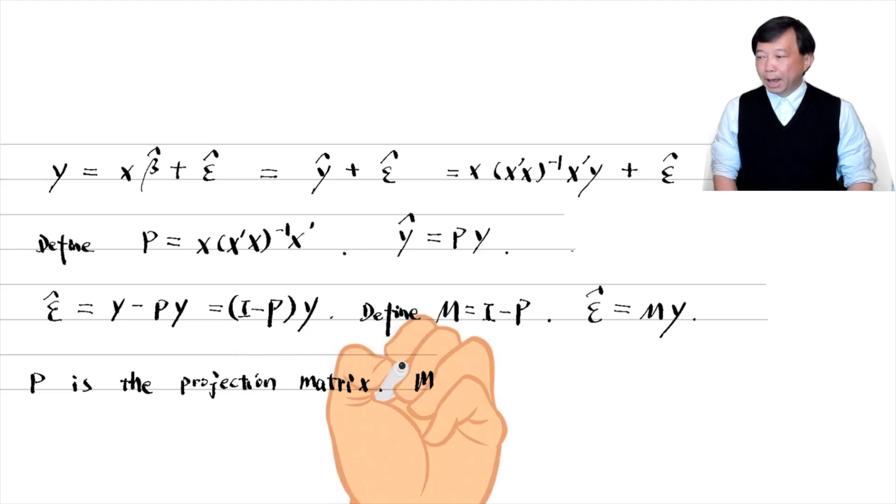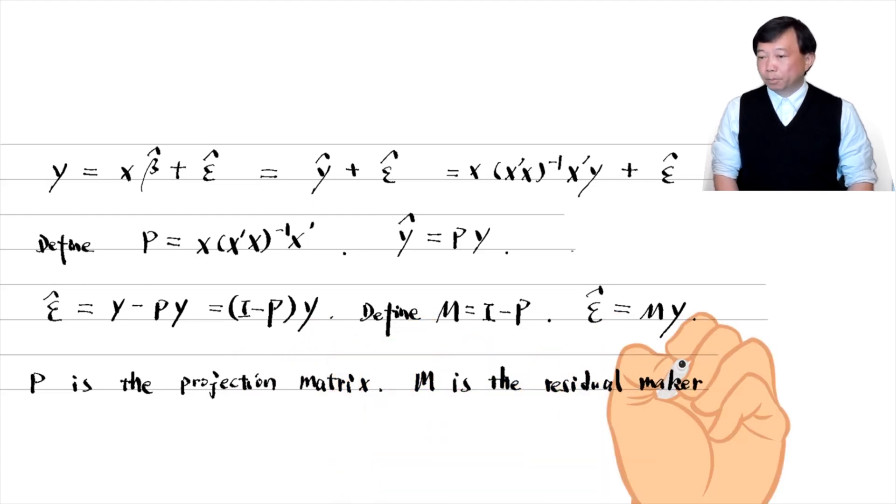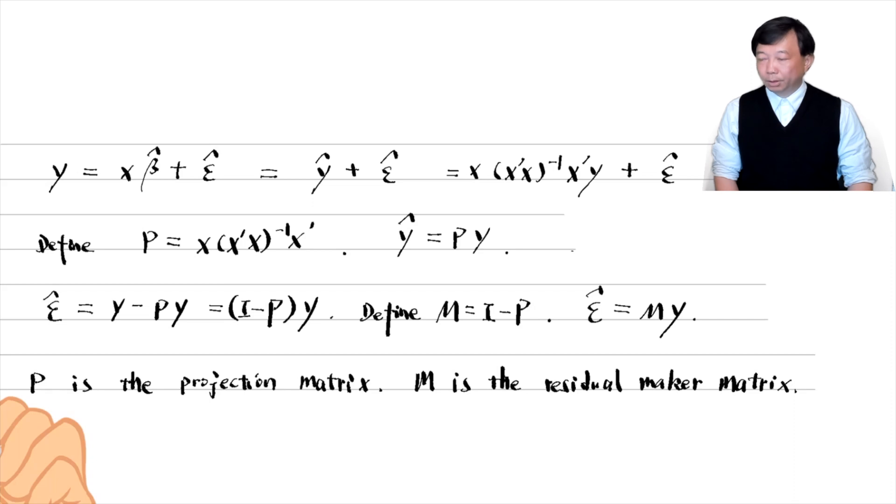The matrix M is also formed from x. M is called the residual maker matrix. Because when M pre multiplies the outcome variable y, the result is the residuals in the OLS regression of y on x.